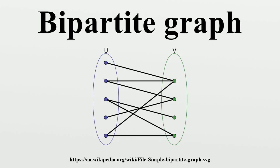Every tree is bipartite. Cycle graphs with an even number of vertices are bipartite. Every planar graph whose faces all have even length is bipartite.